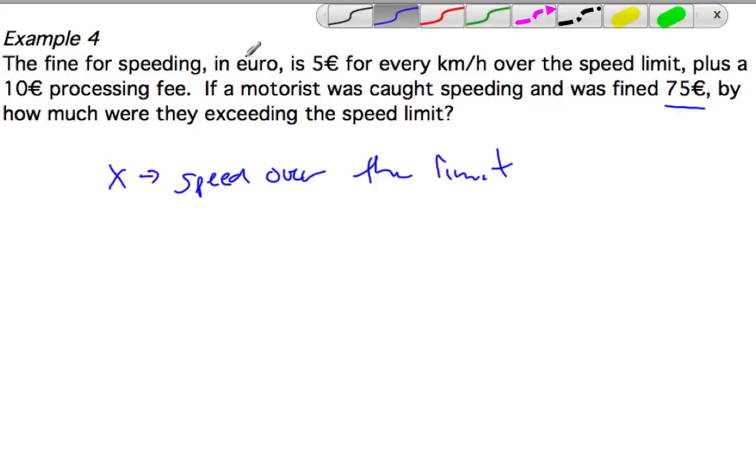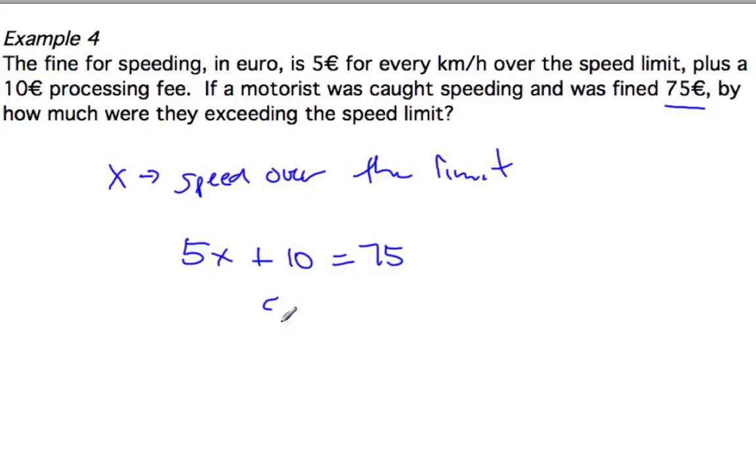Mr. Cole, what have you been thinking about while I've been writing? So we've got, well, five times x, because every time we go one kilometer over, we're going to times it by five. That's going to be our five euro fine. And then we need to add this processing fee. So that doesn't depend on x. That's just add 10, not add 10x. And that's going to give us our 75. So if we subtract our 10, we get 5x is equal to 65.